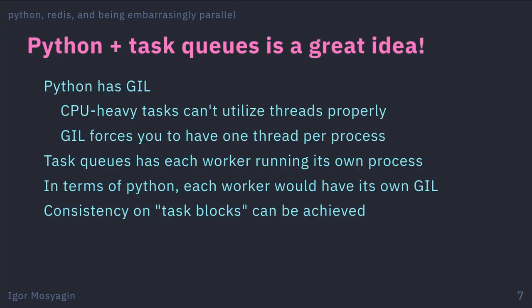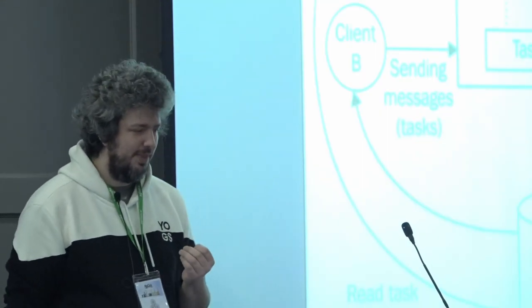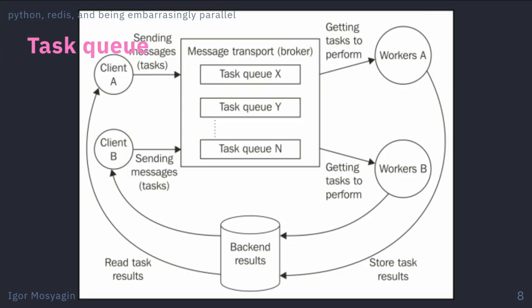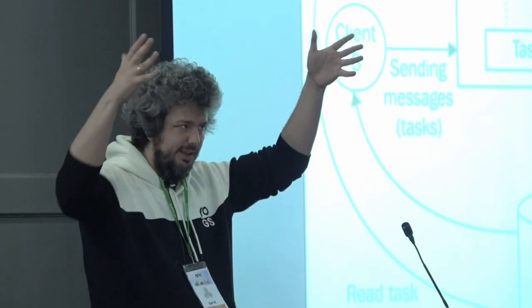If you do it right, task queues can achieve some consistency: there are parts that work here, then come here to work on that. In multi-threading you'd have to deal with mutex blocking, which is not fun. With a task queue you typically have a backend that stores your results, workers that pick work from the task queue, and a broker that stores all the work that needs to be done. Workers pick tasks, do the work, put it in the backend — and hopefully everyone is happy in the end.